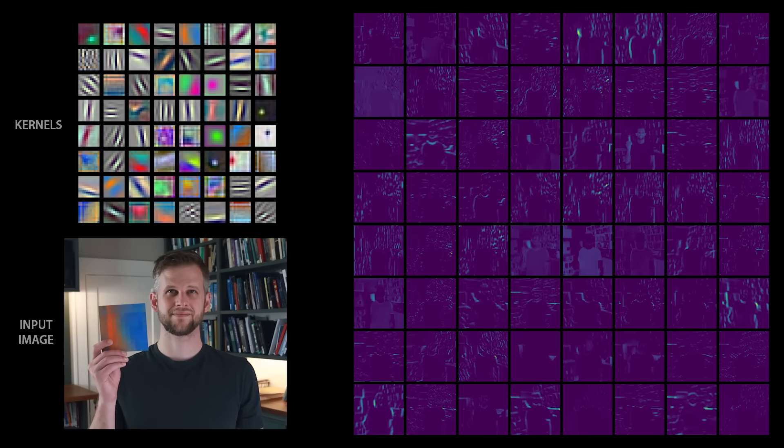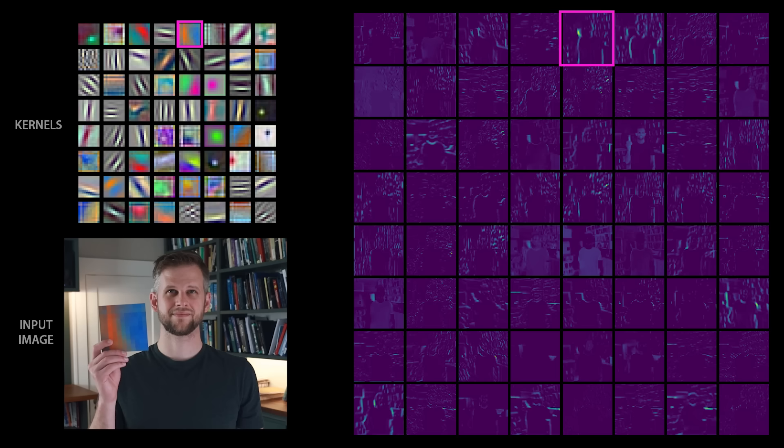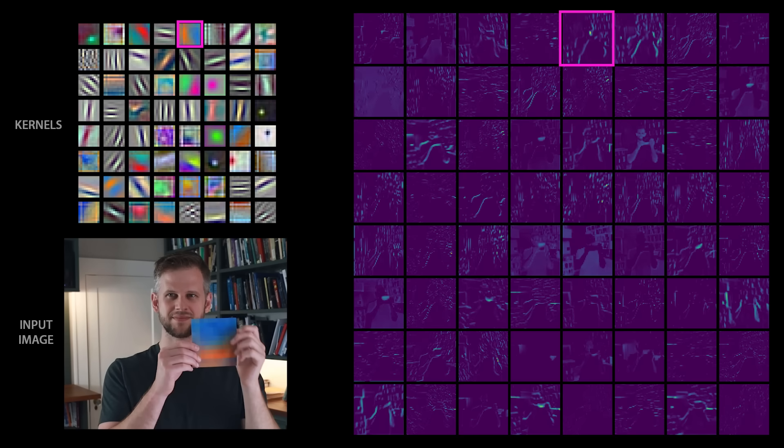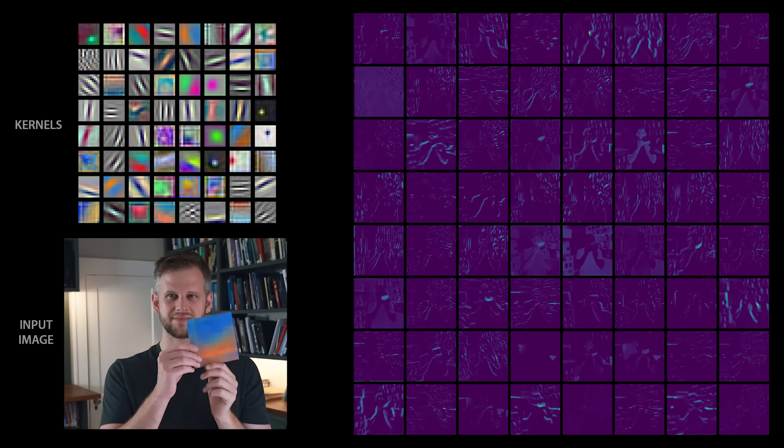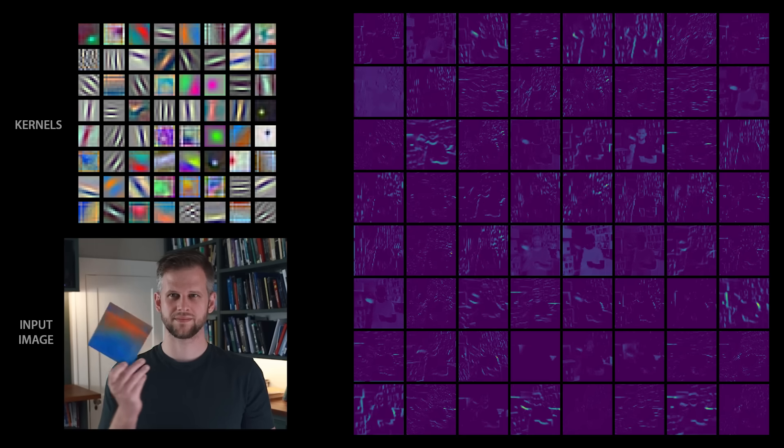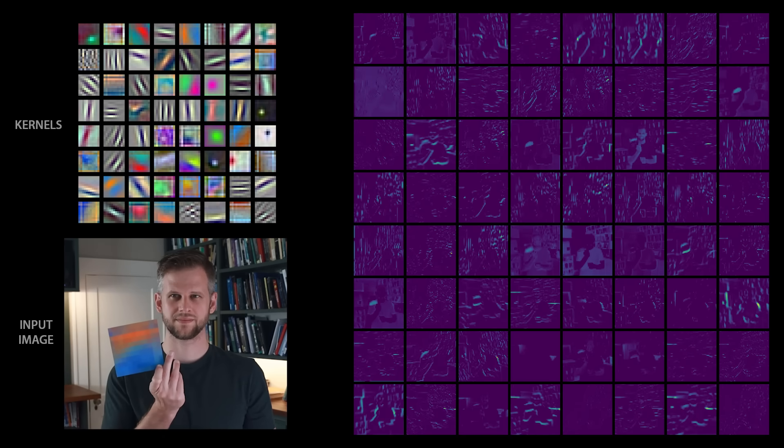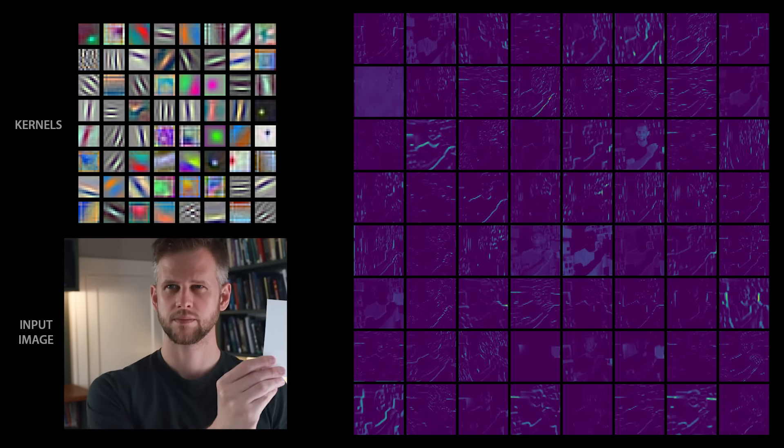If I hold up something visually similar to a given kernel, we see high activation in that part of the activation map. Notice that it goes away when I rotate the pattern by 90 degrees. The image and kernel are no longer aligned. You can also see various activation maps picking up edges and other low-level features in our image. Of course, finding edges and color blobs in images is still hugely removed from recognizing complex concepts like German Shepherds or aircraft carriers.